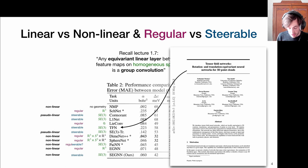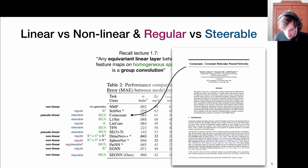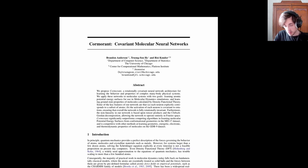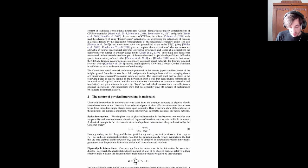That was Tensor Field Networks — a steerable graph neural network of the convolution type. Now let's move to the next seminal paper: Cormorant, also of the steerable type but slightly non-linear. It comes from Risi Kondor's group and is really tuned to the molecular setting. I like this paper because it gave me a lot of intuition about steerable features and how they connect to the quantum chemistry setting.